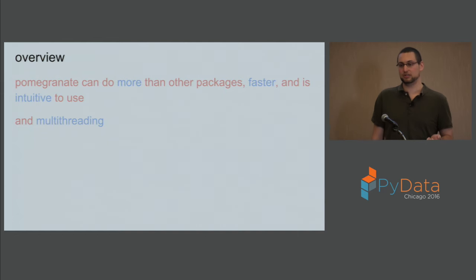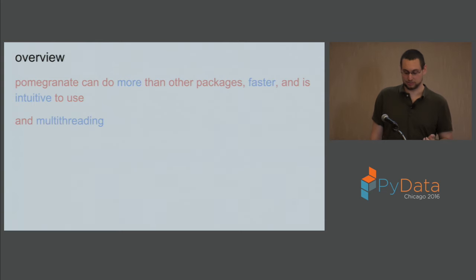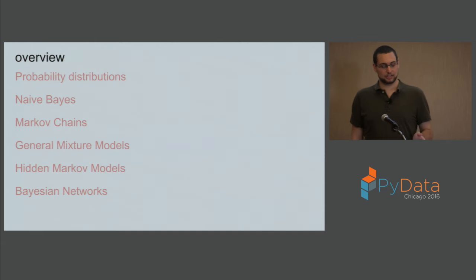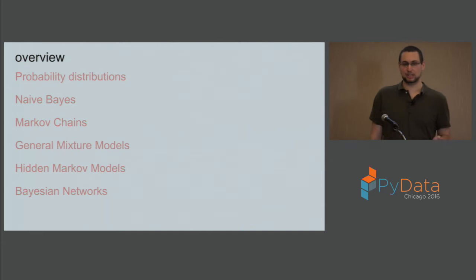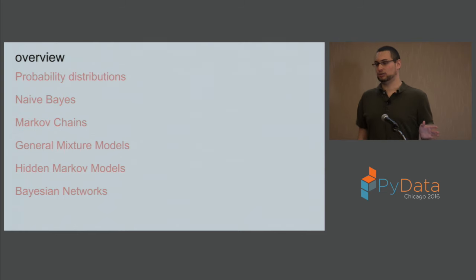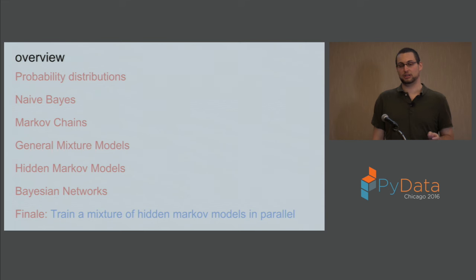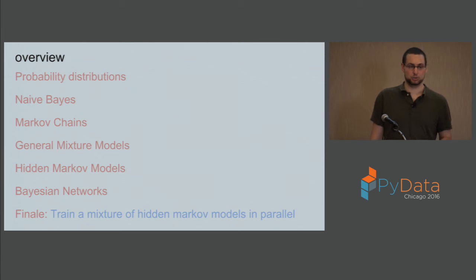The overview of this talk: I'll go quickly through basic probability distributions, then into the remaining five models. At the end I'll show how you can train a mixture of hidden Markov models in parallel using multi-threading — and hopefully you'll see how intuitive it is without needing extensive knowledge of the back end to get complicated models working.